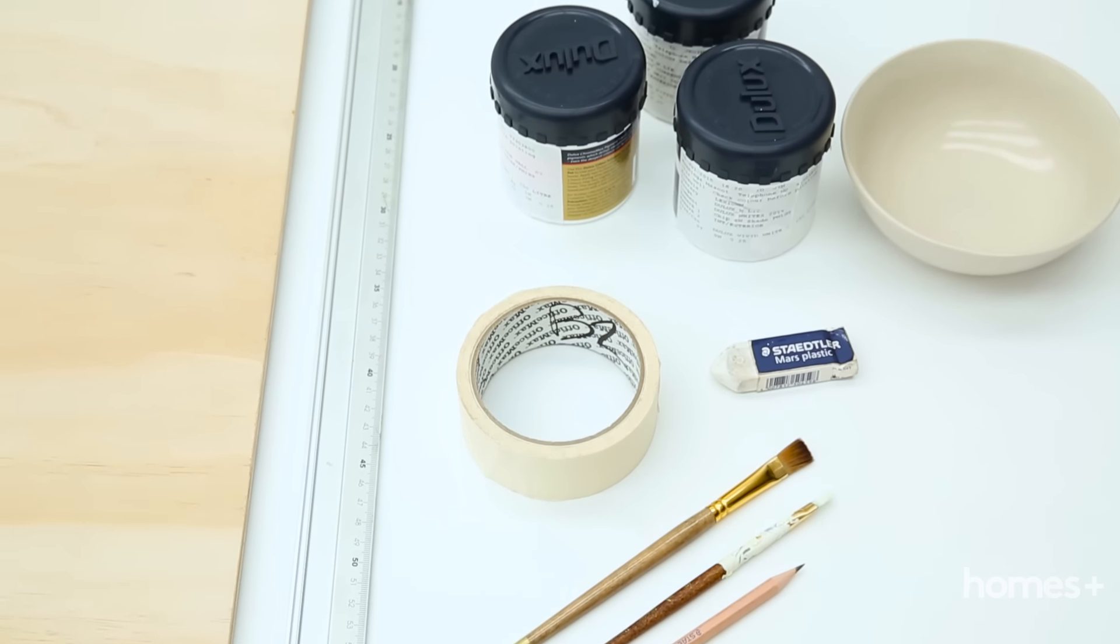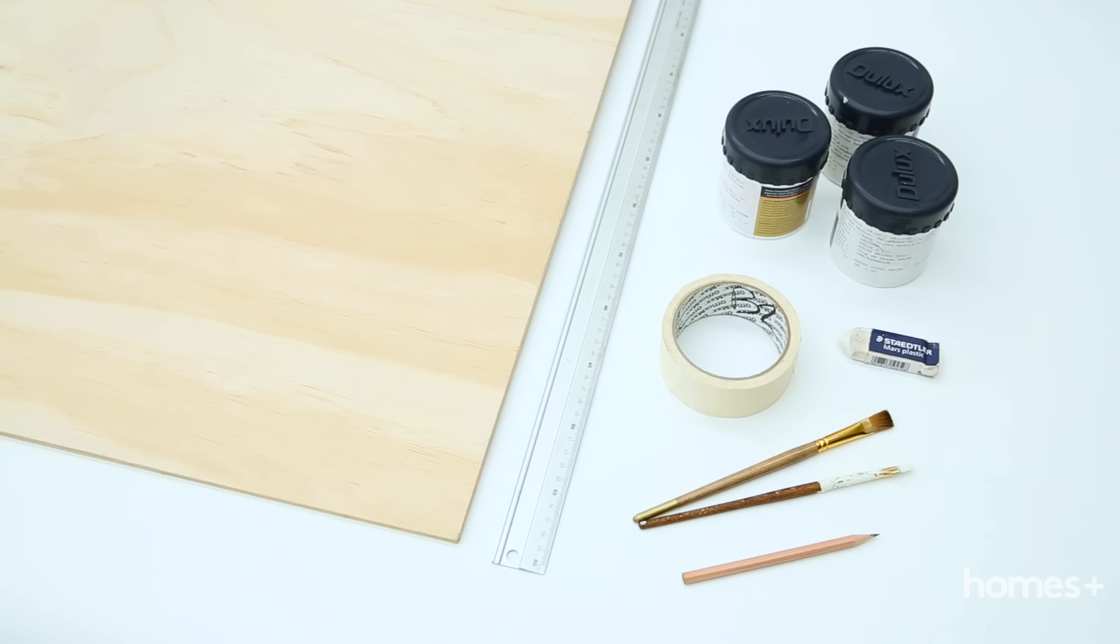You're going to need a sheet of plywood, 60 by 90 cm, masking tape, a ruler, pencil, eraser, three different colours of paint and a paintbrush.